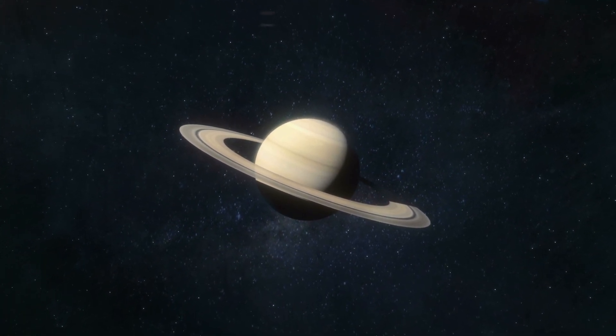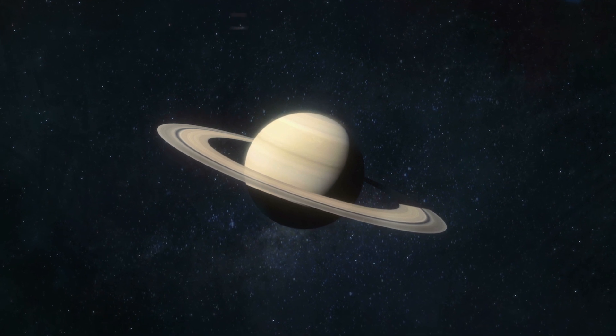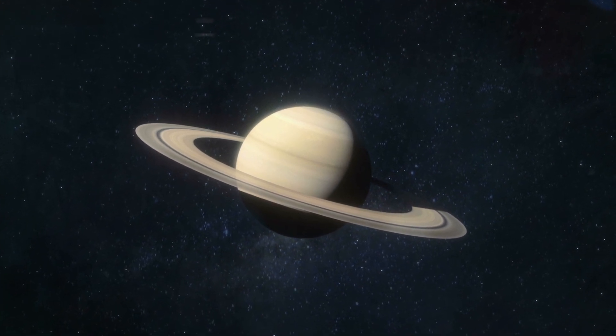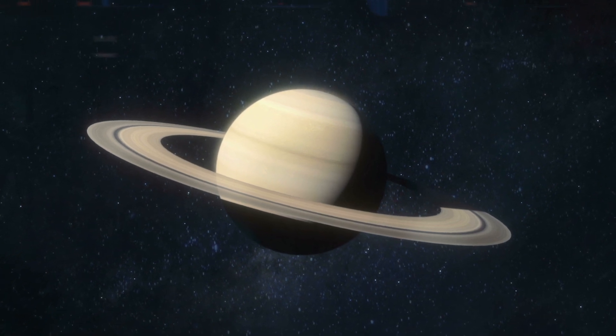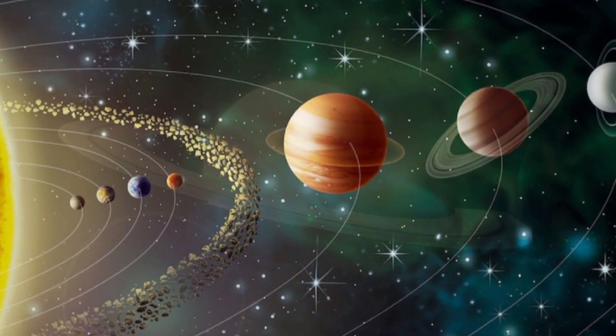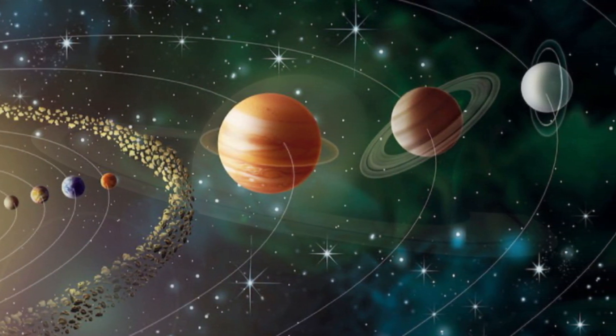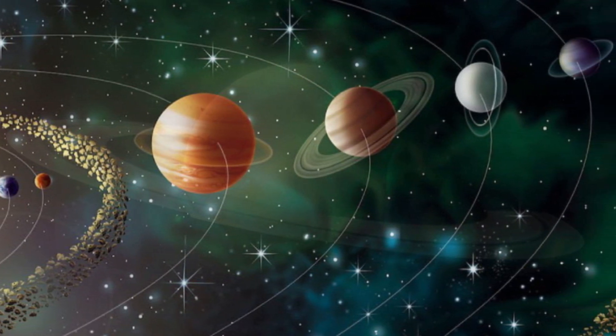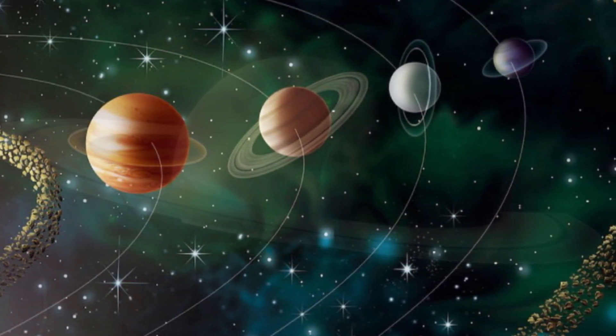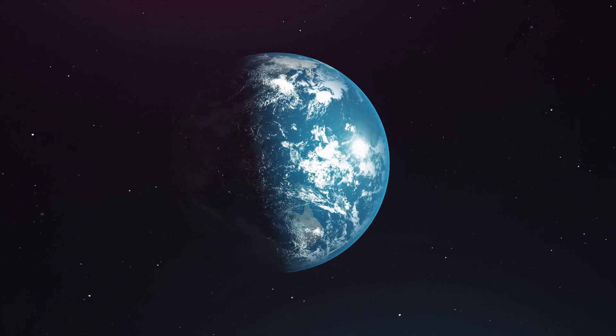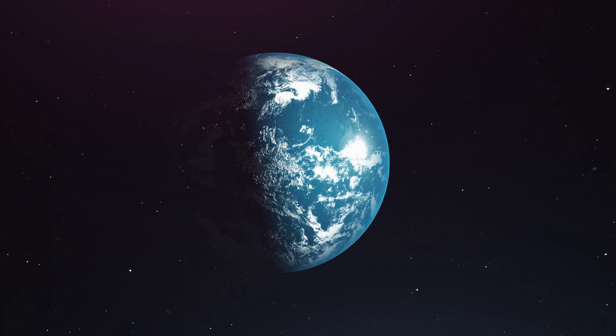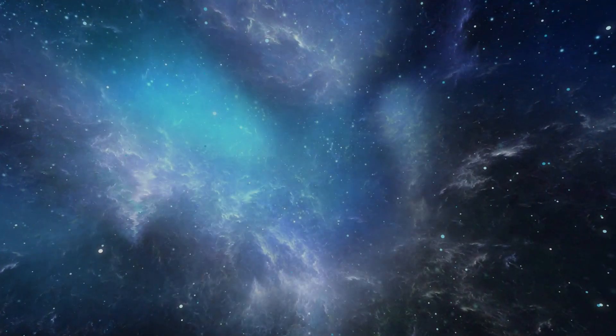With its majestic rings and large size, Saturn is possibly the most recognizable planet in the solar system outside of Earth. Saturn is the sixth planet from the Sun and averages 886 million miles from our star, which is roughly 9.5 astronomical units. By comparison, Earth is one astronomical unit from the Sun. At this distance, light takes approximately 80 minutes to reach Saturn, whereas it only takes 8 minutes to reach Earth.